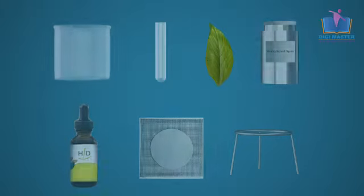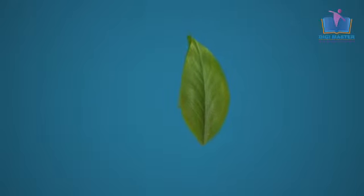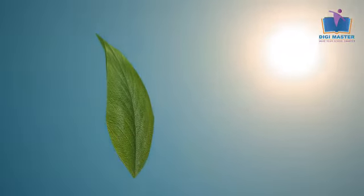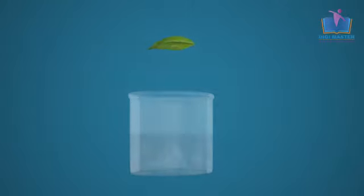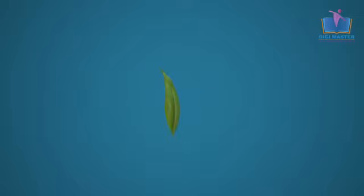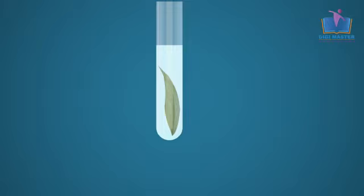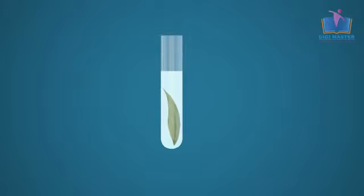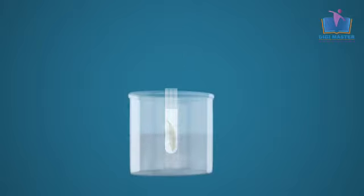Procedure: Take a leaf from a plant which has been exposed to sunlight for a few hours. Dip the leaf in boiling water. Later, place the leaf in a test tube containing methylated spirit. Boil the test tube over a water bath.